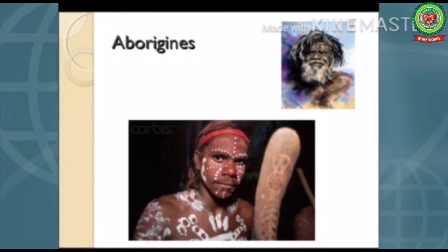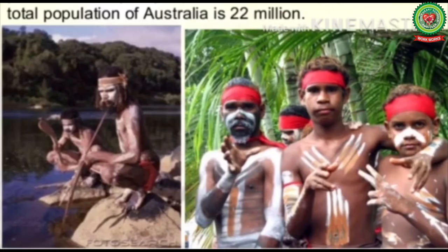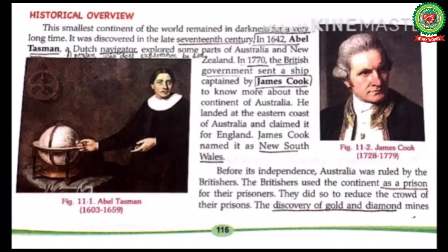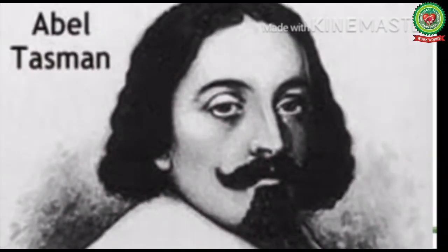Aboriginal and Torres Strait Islanders form the indigenous population of this continent. This smallest continent of the world remained in darkness for a very long time. It was discovered in the late 17th century. In 1642, Abel Tasman, a Dutch navigator, explored some parts of Australia and New Zealand.